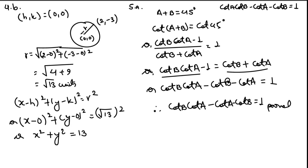Question 4b: find the equation of a circle with center (0, 0) passing through the point (2, −3). From these two points, we find the radius using the distance formula: r = √((x₂−x₁)² + (y₂−y₁)²) = √13. Using the equation of a circle (x−h)² + (y−k)² = r², substituting h = 0, k = 0, r = √13, we get x² + y² = 13 as the required equation.